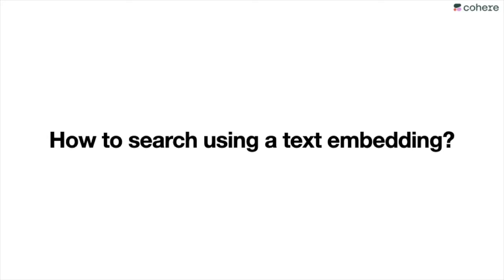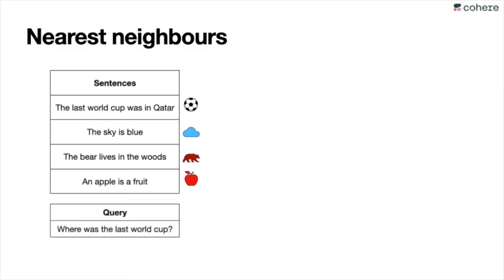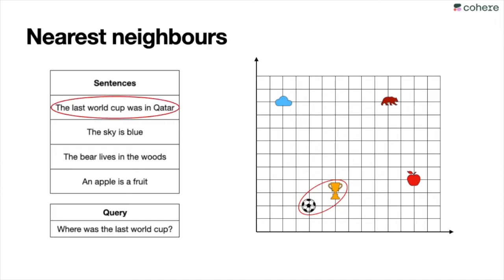The question is: how do you search using a text embedding? We use something called nearest neighbors. Take these four sentences again — 'The last World Cup was in Qatar,' 'The sky is blue,' 'The bear lives in the woods,' and 'An apple is a fruit' — and the query 'Where was the last World Cup?' When we locate everything in the embedding, the query lands close to the first sentence because semantically the embedding knows they are similar. So the winner is 'The last World Cup was in Qatar.' This way of searching takes into account the meaning of the sentence, not just the words, making it much more effective than lexical search.